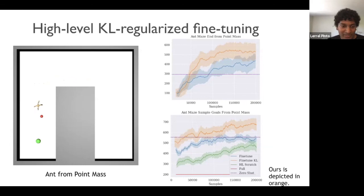Also in green, you can see what happens if you train your high-level from scratch without doing any high-level imitation. And in this case, it fails entirely.